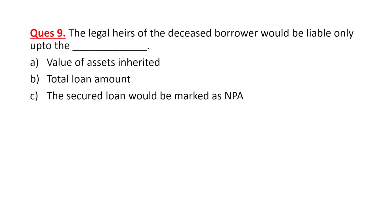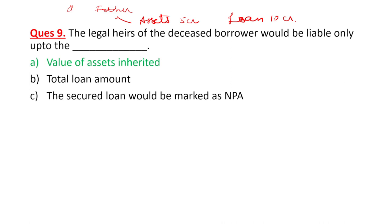The legal heirs of a deceased borrower would be liable only up to the value of assets inherited. For example, if the father had assets worth 5 crore rupees but a loan worth 10 crores, the bank cannot claim 10 crores — it can only claim up to the value of the assets inherited by the legal heirs.